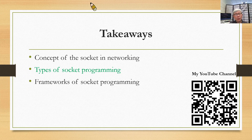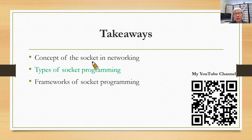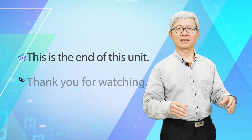Takeaways. We have discussed the concept of a socket in networking. Using that concept, we can enable socket programming. We have two types of socket programming: TCP, which is the reliable socket programming, and UDP, which is the unreliable socket programming. Based on socket programming, we can build frameworks for both TCP and UDP. That's it for this short course, Unit 3. If you want to see more videos, you can browse the link here. Thank you for watching.